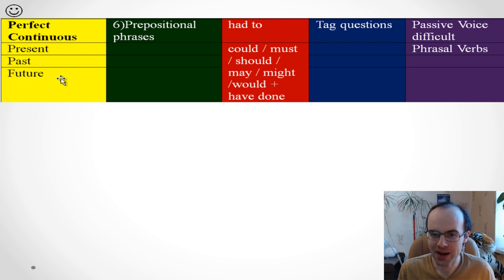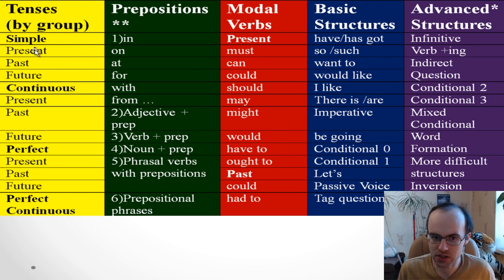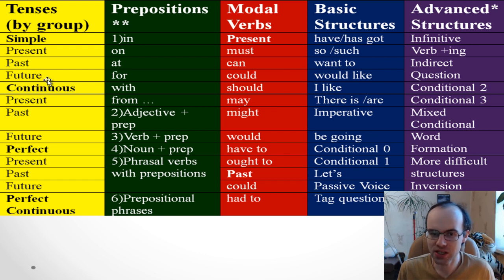And future perfect continuous: 'I will have been watching this channel for about a year by next year.' Maybe it's a little bit difficult, but you need to start with simple tenses first — present simple, past simple, future simple. If you don't know English tenses, you know nothing, my friends.